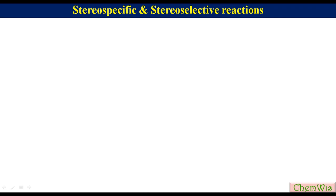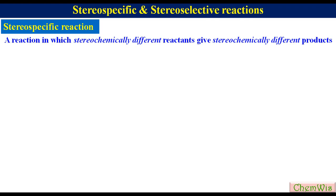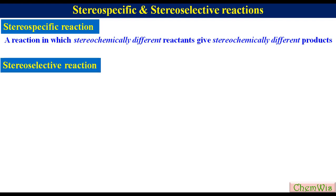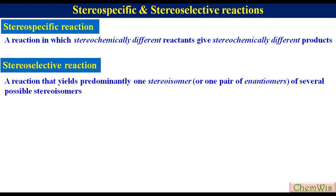A stereospecific reaction is defined as a reaction in which stereochemically different reactants give stereochemically different products. This means if a molecule has two stereoisomers and both are subjected to the same chemical transformation, then the products formed from the two stereoisomers are two different stereoisomers. A stereoselective reaction is defined as a reaction that yields predominantly one stereoisomer or one pair of enantiomers of several possible stereoisomers.